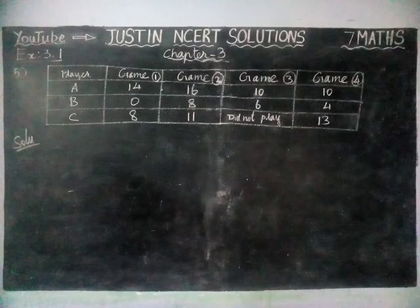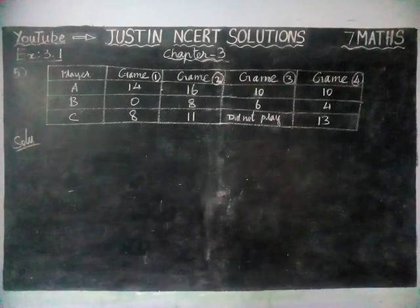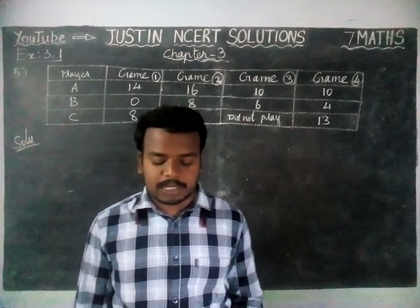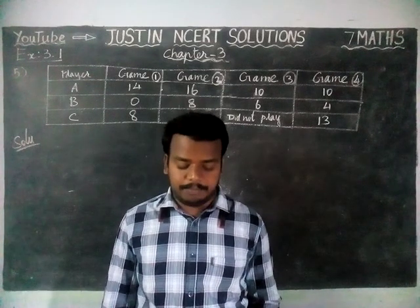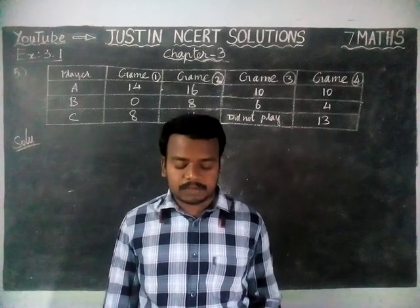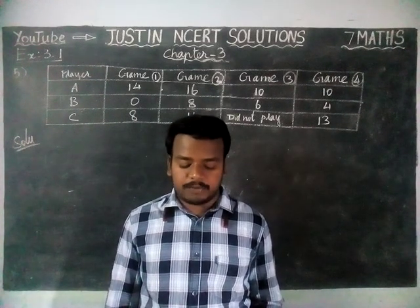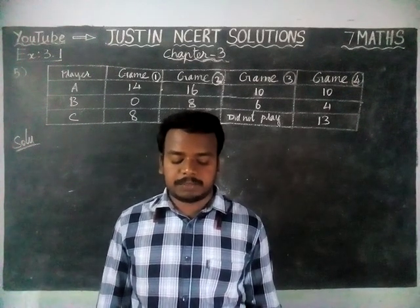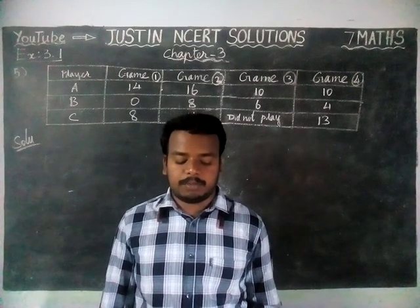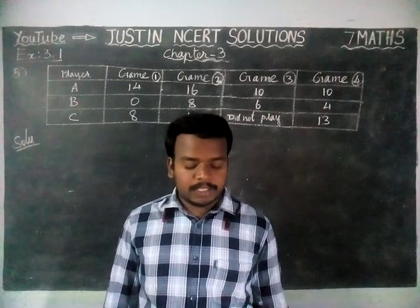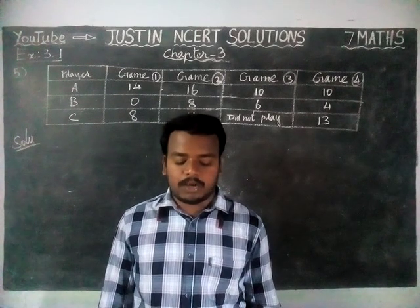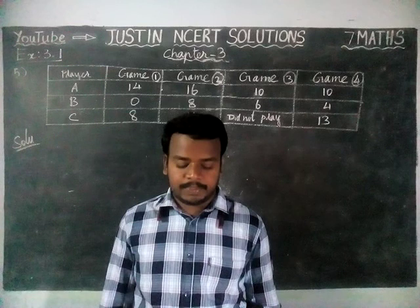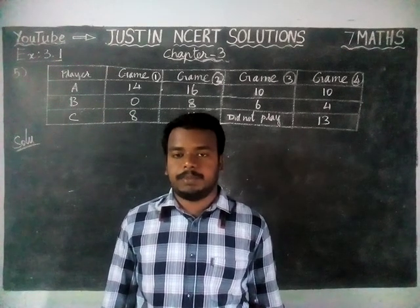Now we have to find the mean to determine each player's average number of points scored per game. 2nd question: to find the mean number of points per game for C, would you divide the total points by 3 or by 4? Why? 3rd question: B played in all 4 games — how would you find the mean? 4th question: who is the best performer?